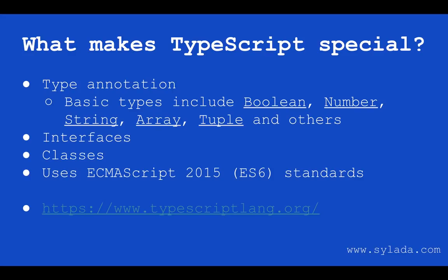What makes TypeScript special and different from JavaScript? Well, for one thing, it has type annotation, which basically gives you the option of assigning types to variables and functions, hence its name, TypeScript. Some basic types include booleans, numbers, strings, arrays, tuples, and others.